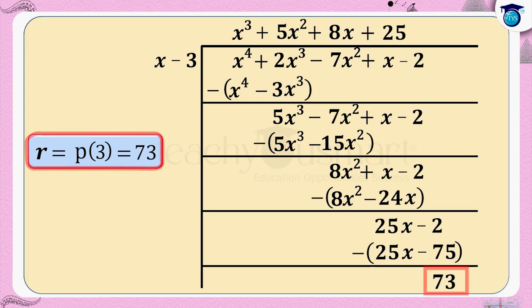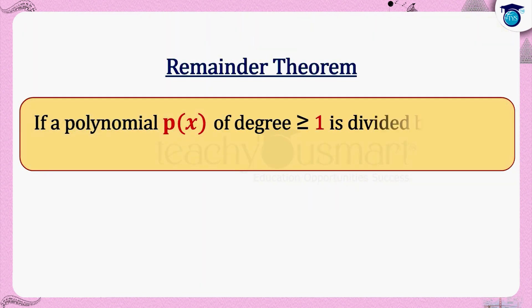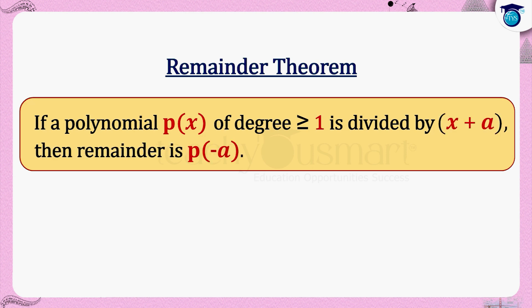Hence verified that the remainder is 73. Similarly, if a polynomial p of x of degree greater than or equal to one is divided by a linear polynomial x plus a, then the remainder is p of minus a.